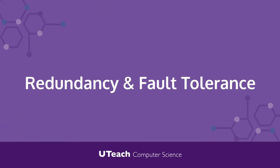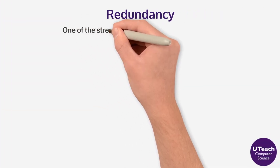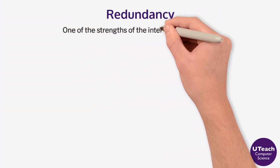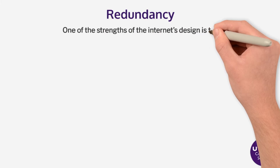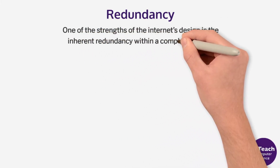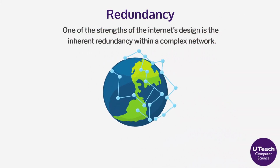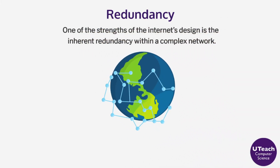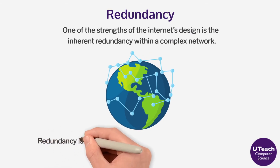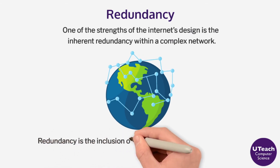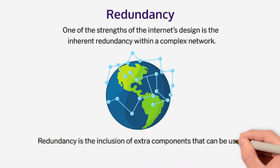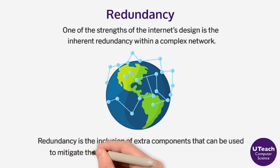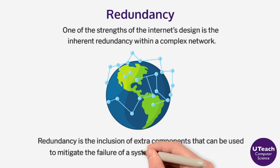Redundancy and Fault Tolerance. One of the strengths of the Internet's design is the inherent redundancy within a complex network. Redundancy is the inclusion of extra components that can be used to mitigate the failure of a system if other components fail.